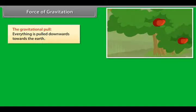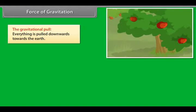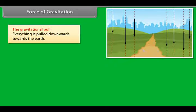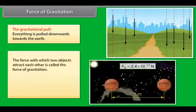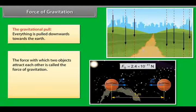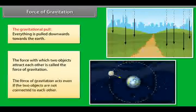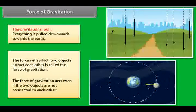The gravitational pull: everything is pulled downwards towards the earth. The force with which two objects attract each other is called force of gravitation. The force of gravitation acts even if the two objects are not connected to each other.